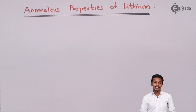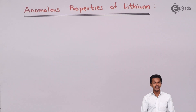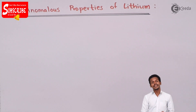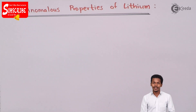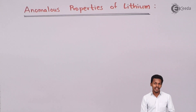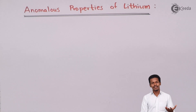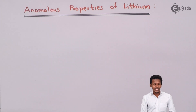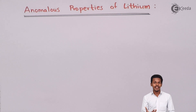Talking about the anomalous property of lithium: first of all, lithium is the first element of the group 1 elements, and that is the reason it will have a smaller atomic size as well as a smaller ionic size. Because of this property, we could say that lithium has more polarizing power.